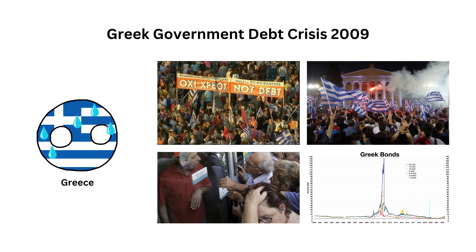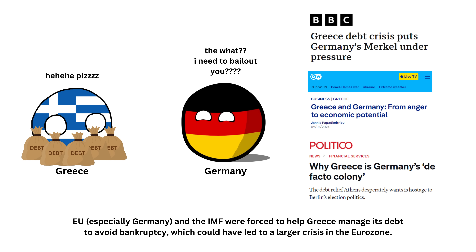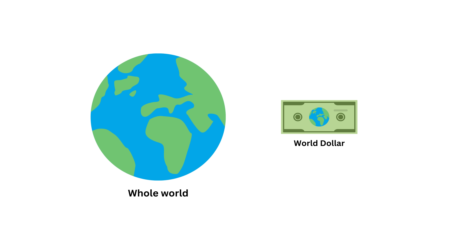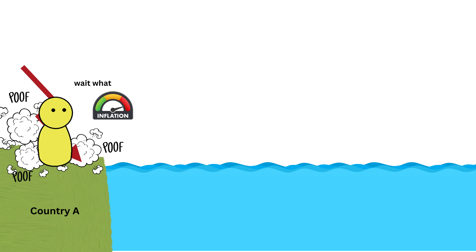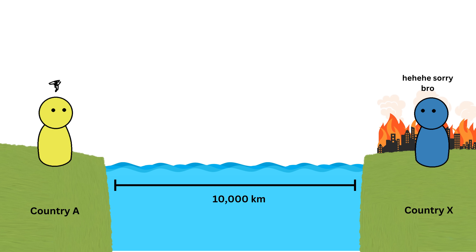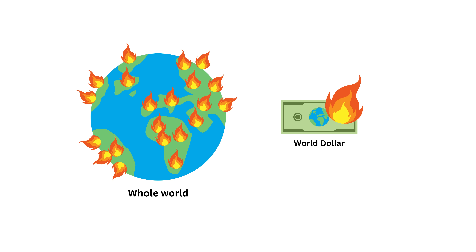For example, when Greece had a financial crisis in 2009, the effects spread to other eurozone countries. And that's why Germany is not so happy with Greece about this. So, if all countries in the world decided to use a single currency, it would be very risky. Imagine living your best life, but then facing inflation and a crisis just because a country thousands of miles away messes up its economy. One country's problem would become a problem for the whole world.